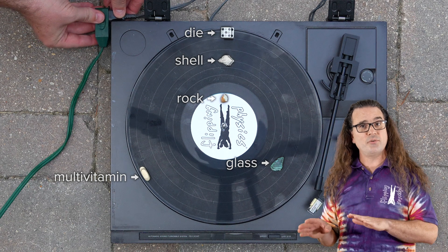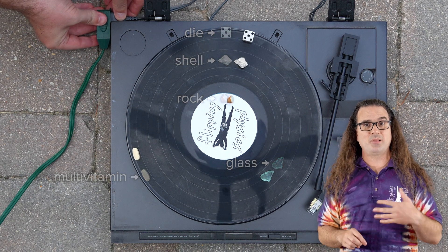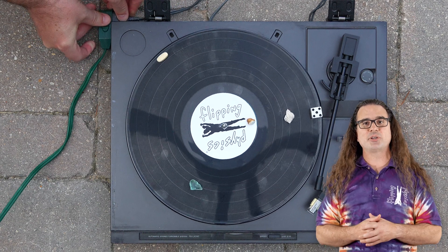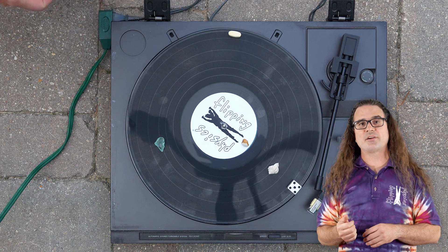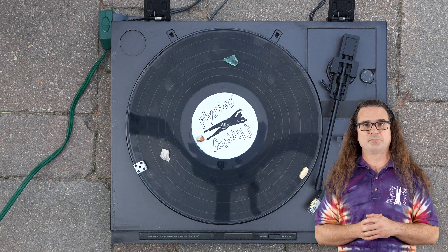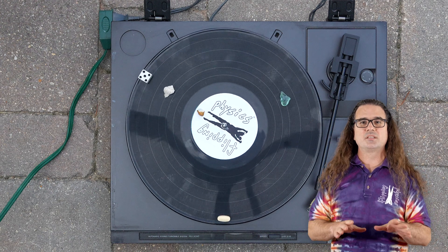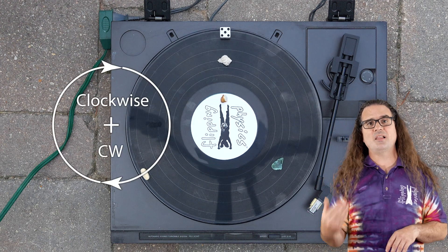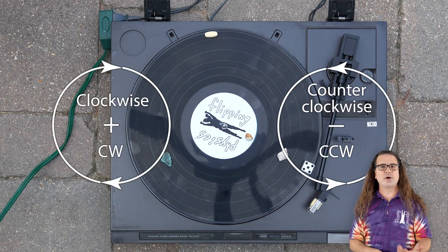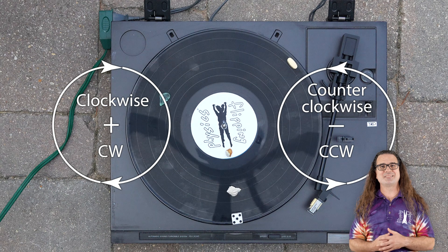When I turn on the record player by plugging it in, all five objects placed on the record move as one rigid system. Today, we define clockwise as positive and counterclockwise as negative.